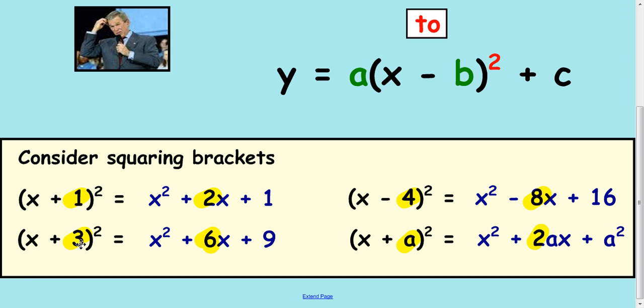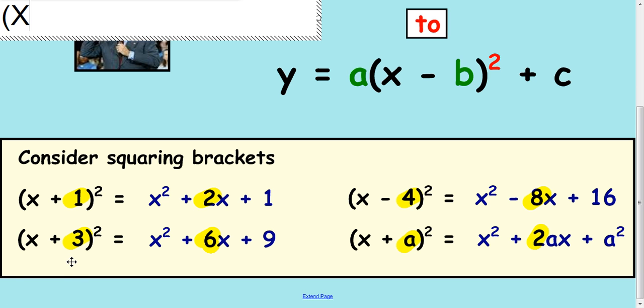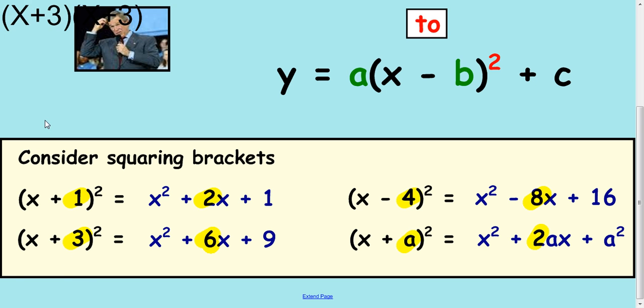Same idea with (x + 3)². You're going to get an x², a 3x, another 3x and then a 9. The way to look at it is to think about the brackets like that. OK.